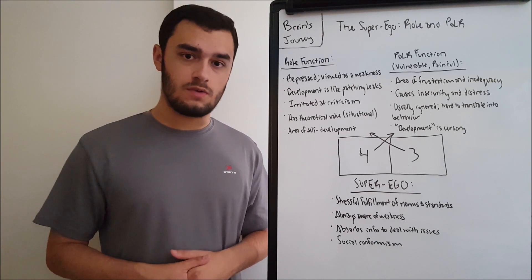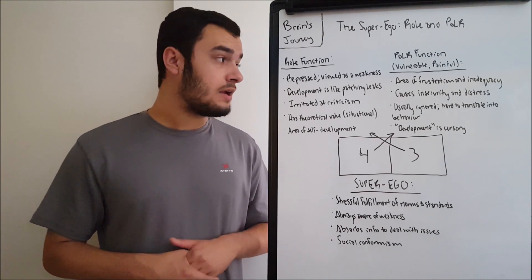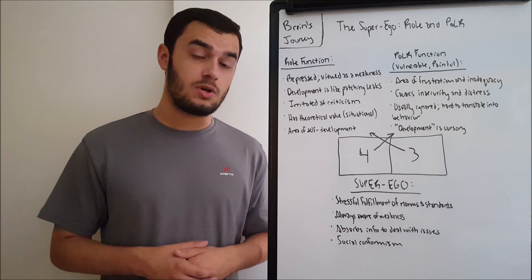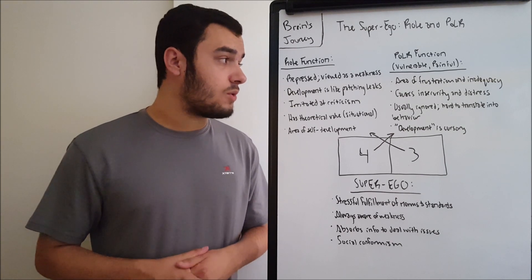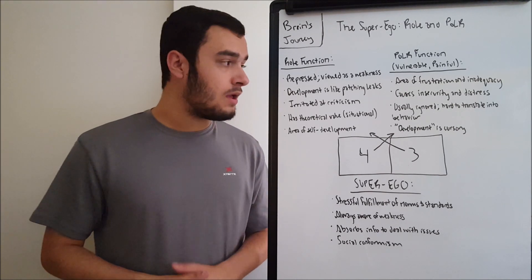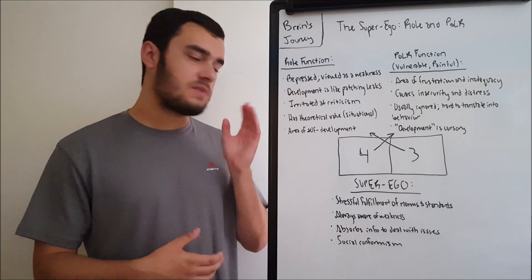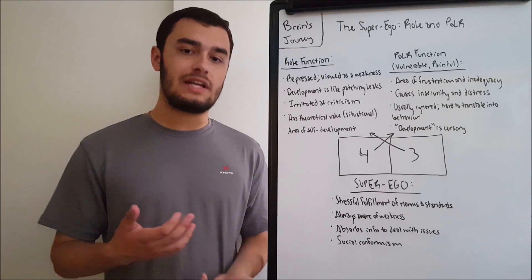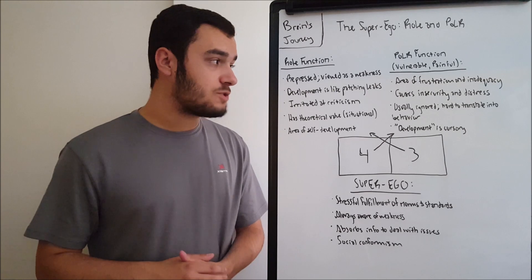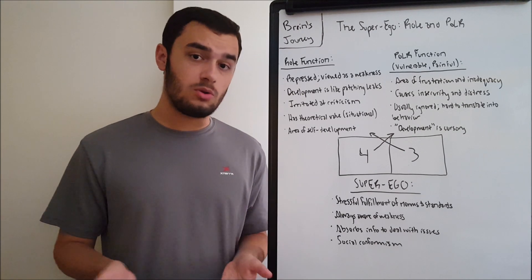We do not like to use this function. It is something that we avoid generally at all costs unless it is absolutely necessary to use it, because we are very weak here and information processing in this function is often very difficult to comprehend. When we start to use it and we're not doing very well, that can tend to create frustration. It causes insecurity and distress because we're not good at it. The role is something we can generally manage — we don't like to do it but we do it anyway. The polar is something that we have to do but can't really do.